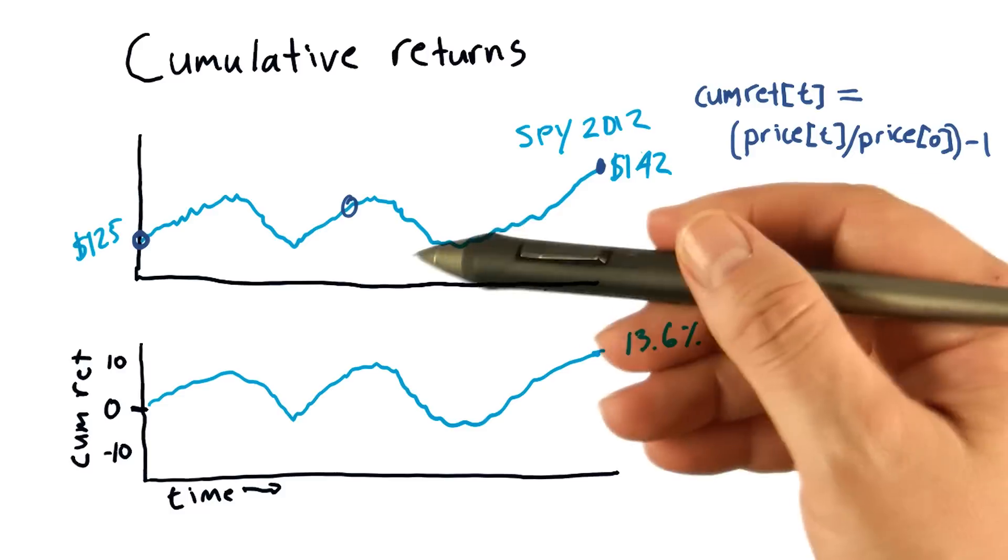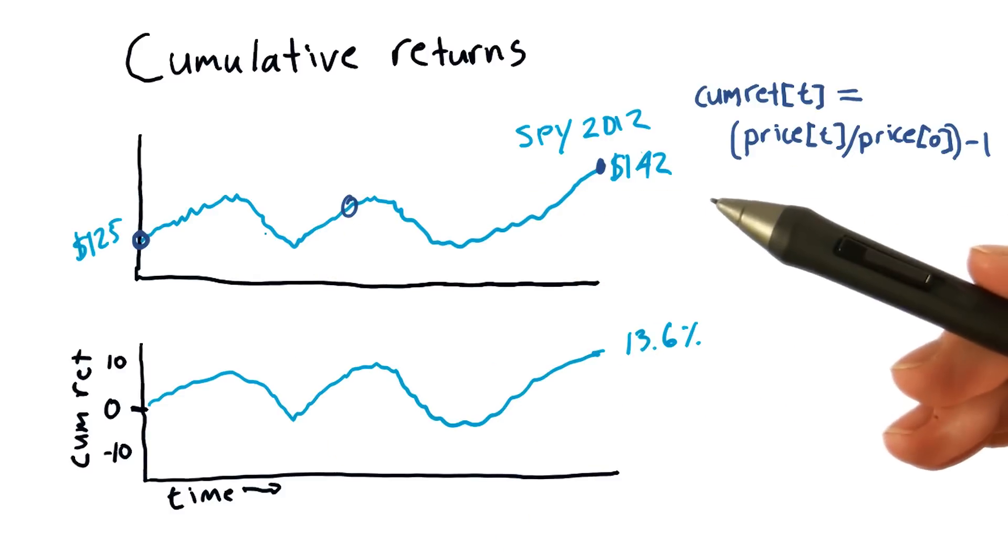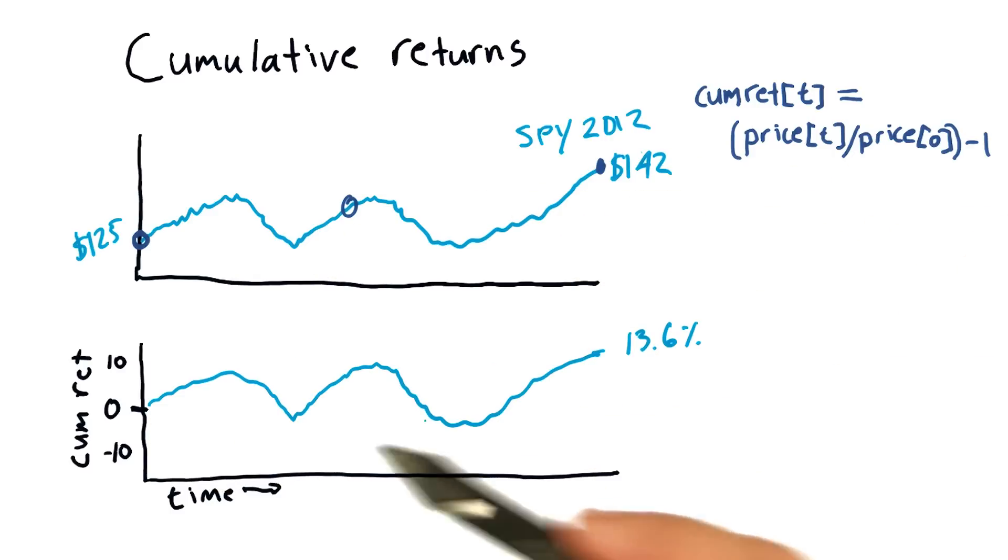Note that the shape of the chart is the same as the price chart. It's just now it's normalized. And in fact, this equation is exactly our normalization equation.